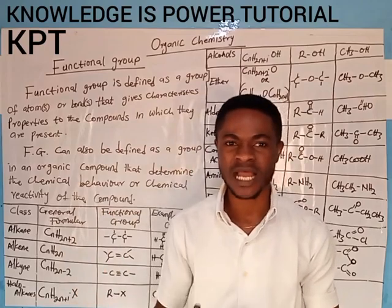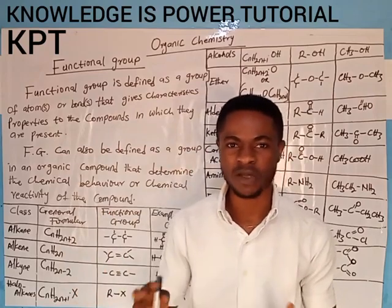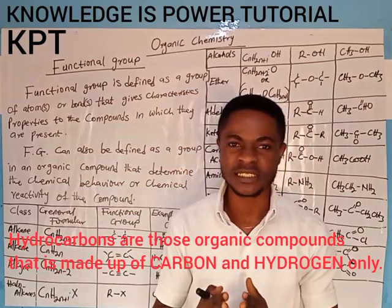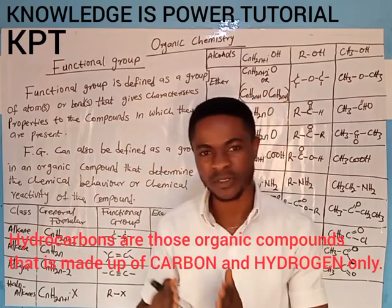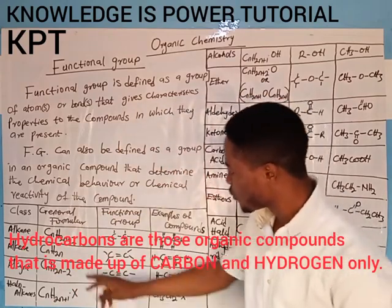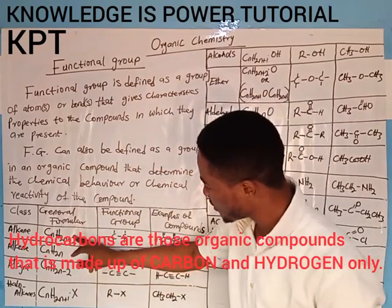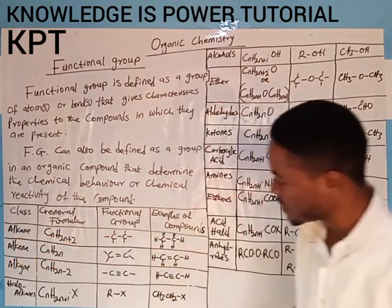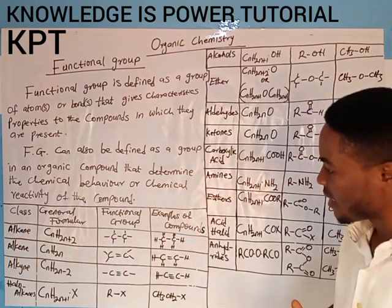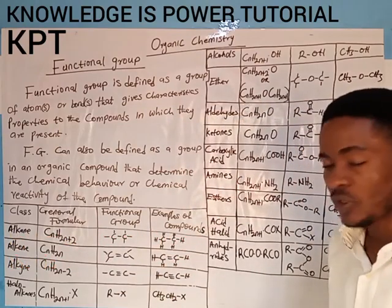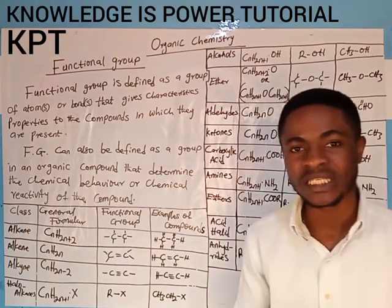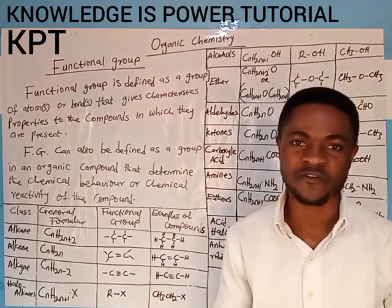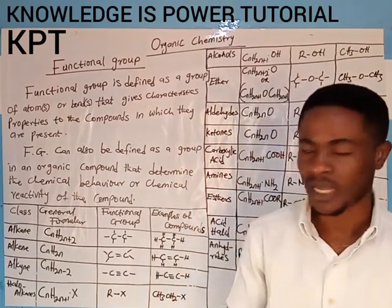The reason is because they are made up of hydrogen and carbon alone. No wonder hydrocarbons are those organic compounds that are made up of two elements, which in this case is carbon and hydrogen. So the alkane, alkene, and alkyne are collectively known as hydrocarbons because they do not contain any other atom or element aside from carbon and hydrogen.